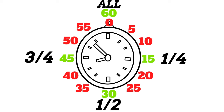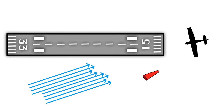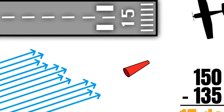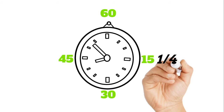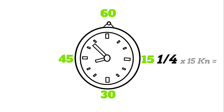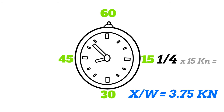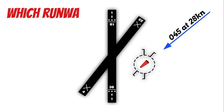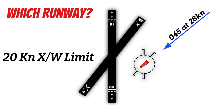Let's try it out. We're landing on runway 15 and the winds are 135 at 15 knots. First, find our wind angle by subtracting 135 from 150, giving us a wind angle of 15 degrees. So 15 degrees is at our 3 o'clock position, and we said we take a quarter of the wind velocity there. Our crosswind component is exactly 3.75 knots — barely even a crosswind. Let's do another one. This time the winds are 045 at 28 knots — which runway should we use? Are we going to be able to land if our airplane's max crosswind component is 20 knots? Pause the video if you think you can solve this one on your own.